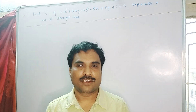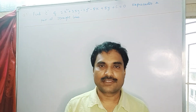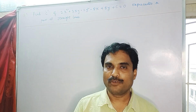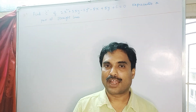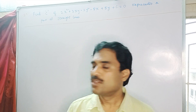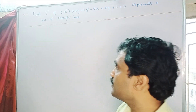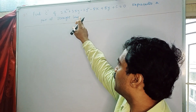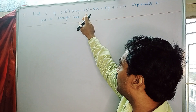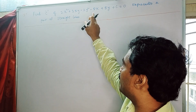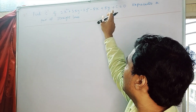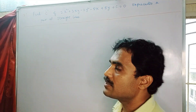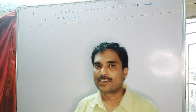Hi, welcome to my channel Anam Takshasila. In this new video, I am going to solve a mathematical problem under conics. The problem is: find C if 2x² + 3xy - 2y² - 5x + 5y + C = 0 represents a pair of straight lines.